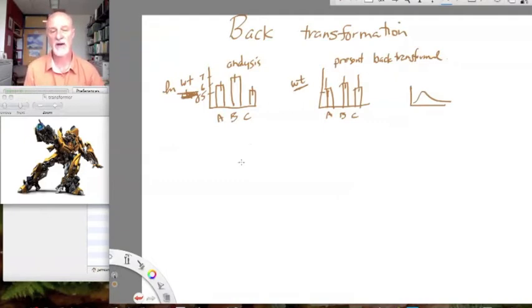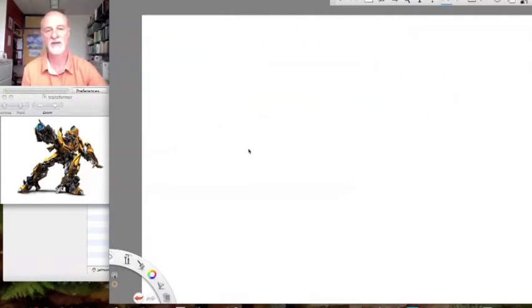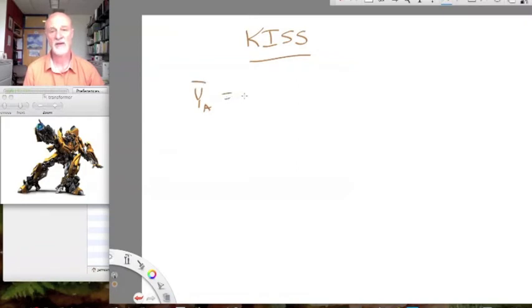So how do we go about back-transforming? I think maybe this is an example where we want to use a keep it simple, stupid dataset. And so what I'm going to do is just create a scenario, and I'm really just going to do this for one mean. Let's imagine we have group A, and we found the mean for that group is two. So we have a nice, simple mean of two.